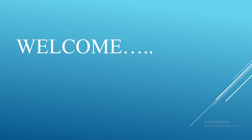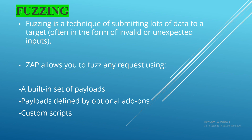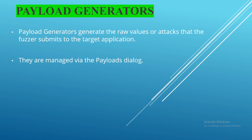Welcome to another section on ZAP. In this section we are talking about fuzzing. Fuzzing is a feature in ZAP which is a technique of submitting a lot of data to a target — that means our testing web application — and it may be valid, invalid, or unexpected input. ZAP allows you to fuzz any request using three items: built-in set of payloads, payloads defined by optional add-ons, and custom payloads. Out of these three we can use any one for the fuzzing.